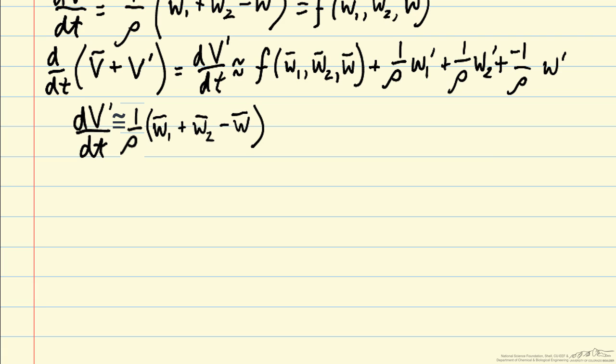And that is equal to 0 at steady state. At steady state, the outlet condition w bar equals the sum of the inlet conditions. And in fact, this is always going to be true if we linearize around steady state. That first term, f evaluated at steady state, will always be 0.